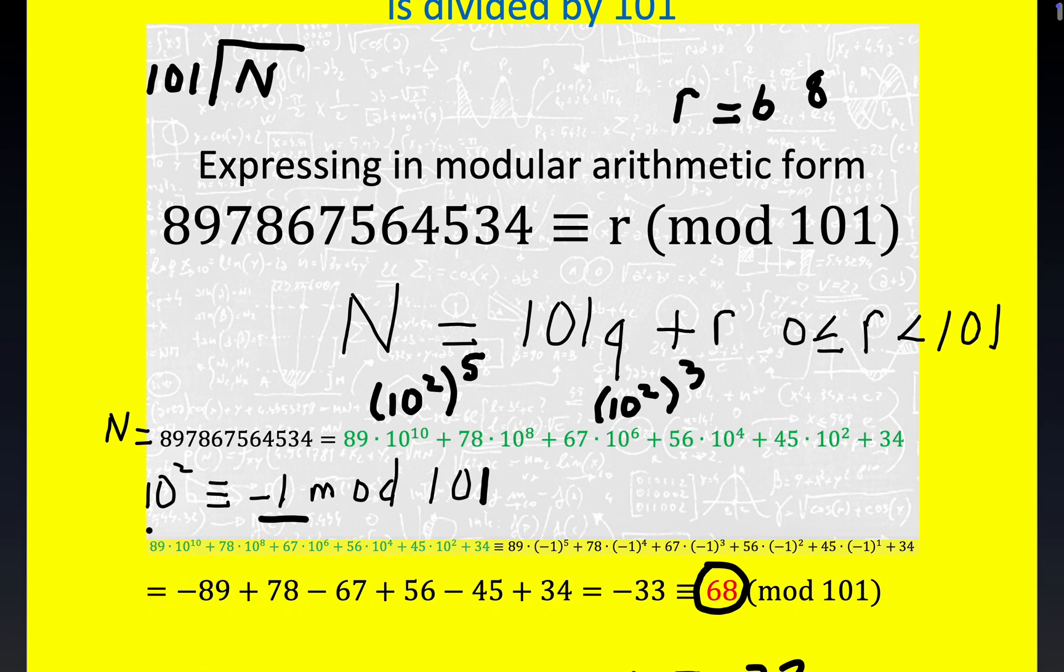So this way literally circumvents the need to find Q directly. The big discovery is that 10 squared is congruent to negative 1. That's what gets the job done. And you can see how negative 1 appears 1, 2, 3, 4, 5 times here. And it's real easy to raise negative 1 to any power you want in any positive integer exponent.